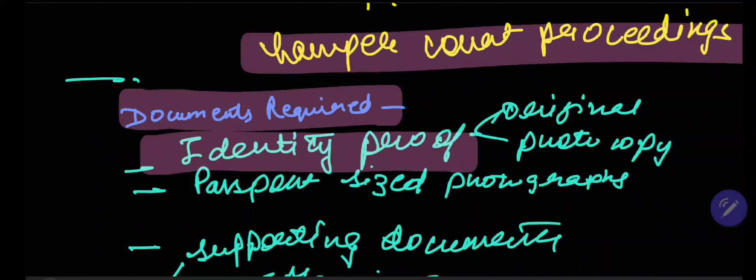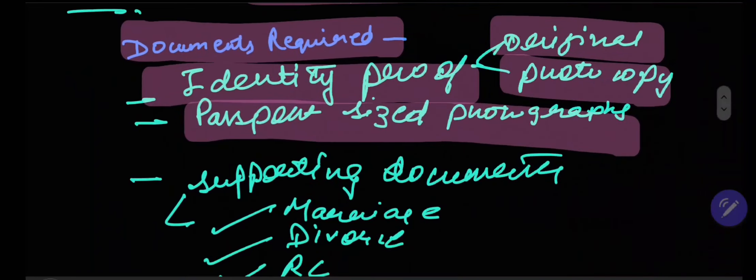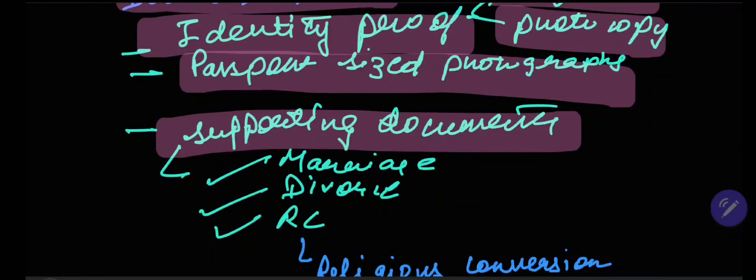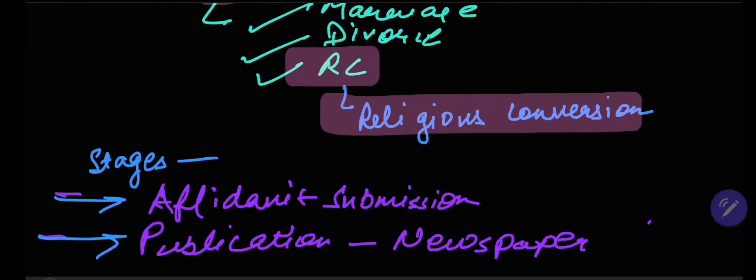What are the documents required for this process? The first thing is you need to have an identity proof, both original and photocopy. Now, this point applies for all the documents involved in this process. You need to have the original and photocopy. And you need to have passport size photographs because you are going to need it at so many different places throughout this whole procedure. You need to have supporting documents. Supporting documents are basically documents that support your reason of change of name. If you are getting married, then you need to have the documents that act as evidence for your marriage. Divorce, then similarly, evidence for divorce. And RCR stands for religious conversions, as I've stated. You need to have documents for that as well.